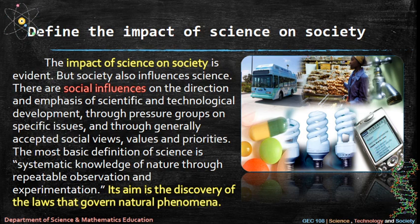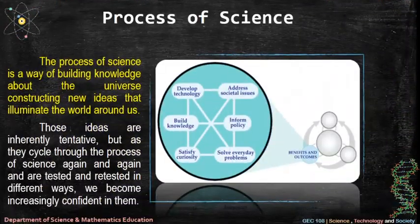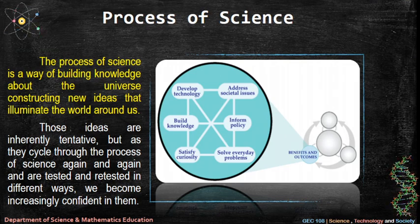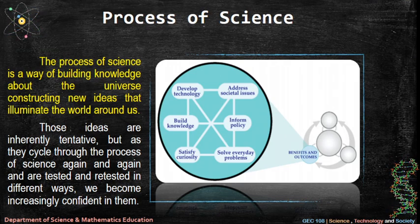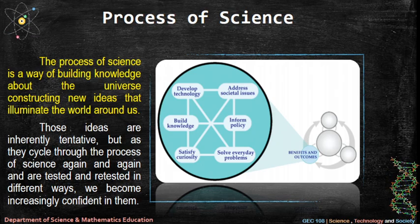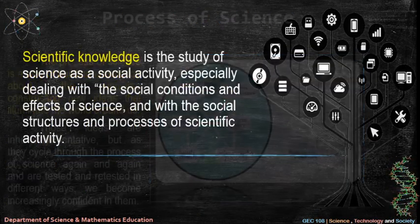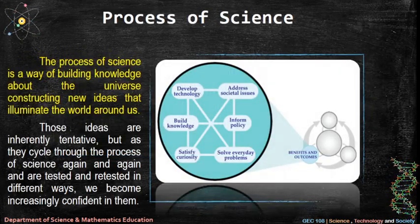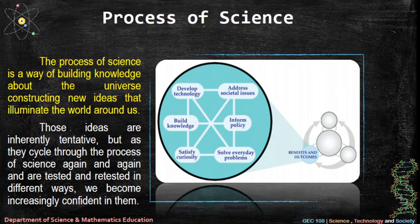The process of science is a way of building knowledge about the universe — constructing new ideas that illuminate the world around us. Those ideas are inherently tentative, but as they cycle through the process of science again and again, tested and retested in different ways, we become increasingly confident in them. The outcomes include: developing technology, building knowledge, satisfying curiosity, addressing societal issues, informing policy, and solving everyday problems.